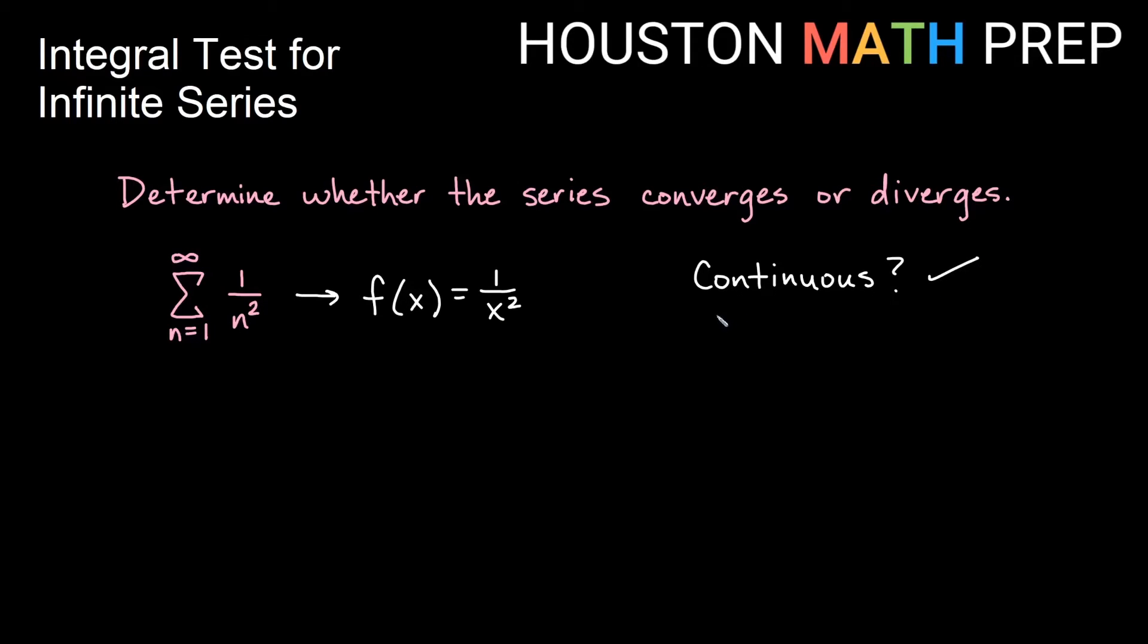It's continuous. We also want to know, is it positive? Does it have all positive terms? And as we plug in positive values for x, we will see, yes, we get positive terms. And is this a decreasing function? Think about it as we plug in larger and larger values. As n gets bigger, as x gets bigger, we get a smaller and smaller fraction. So yes, it's continuous. It's positive. It's decreasing. So we can go ahead and use the integral test.